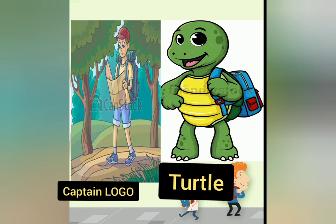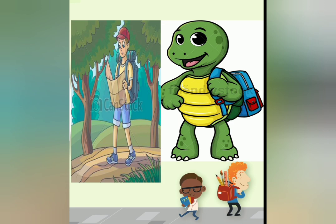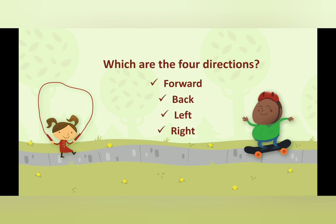So, on seeing the picture, do you have any guess about our story? Yeah, let's listen. Before coming to the story, children, do you know the directions? The four directions are forward, back, left and right. Forward means moving ahead. Back means moving back. Left means turning into the left direction — that is, the direction of your left hand. And right means turning in the right direction — that is, the direction of your right hand.